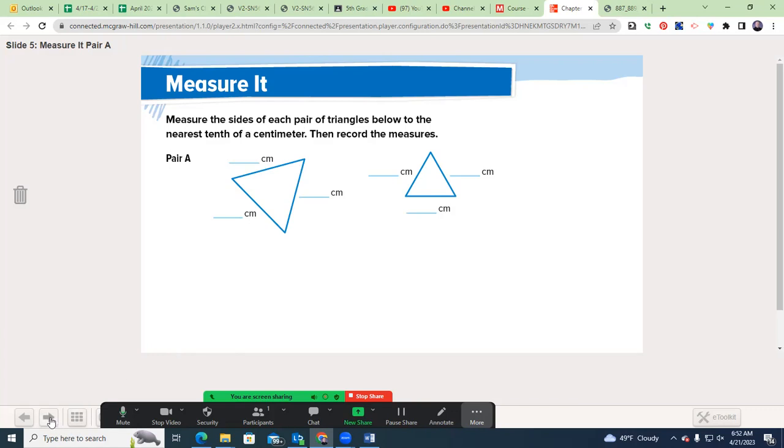Welcome back. Let's see if your numbers match. In pair A, they are both equilateral triangles, which means all three sides are congruent. These were three centimeters. These were two. So it's 50% bigger.